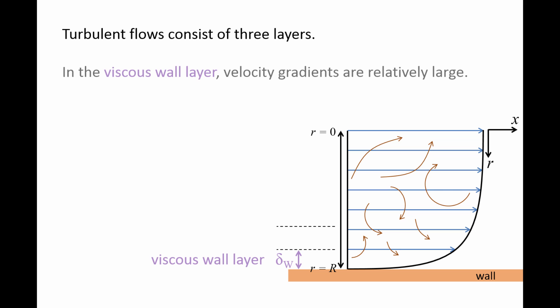The layer closest to the wall is called the viscous wall layer. In this layer, velocity gradients are relatively large due to the no-slip boundary condition, and the laminar shear stress term is much larger than the turbulent shear stress term.